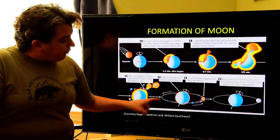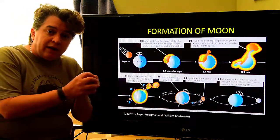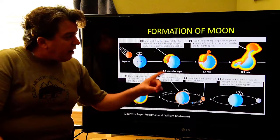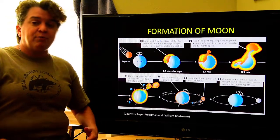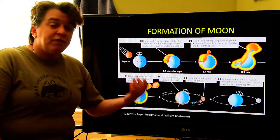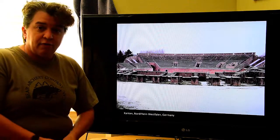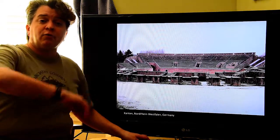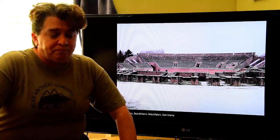Now, eventually, that debris that was in orbit around Earth coalesced. It came together and formed our moon. And so, now we have a planet with a moon that looks pretty much like our modern Earth. And we are going to spend the rest of the semester learning about how that planet works.